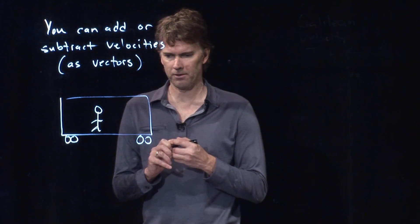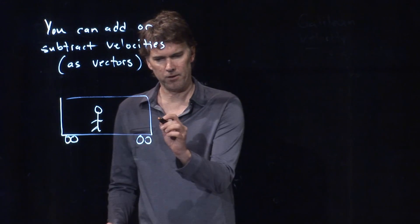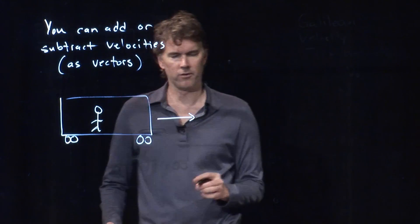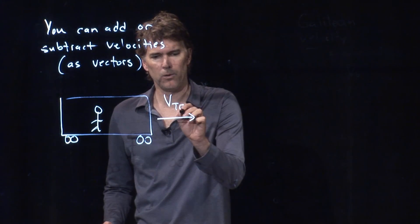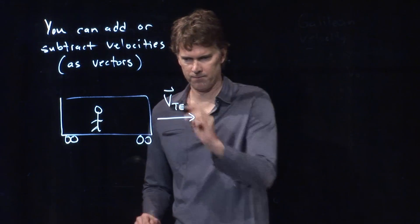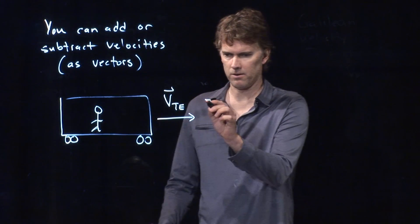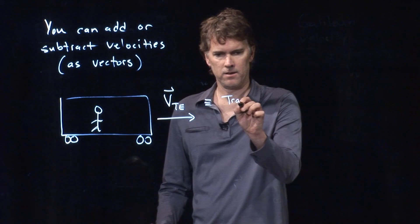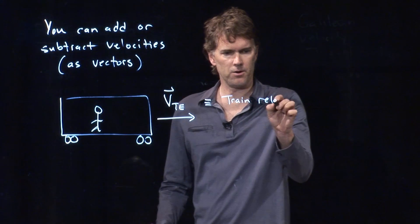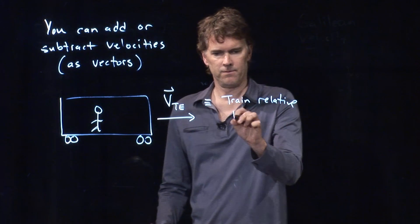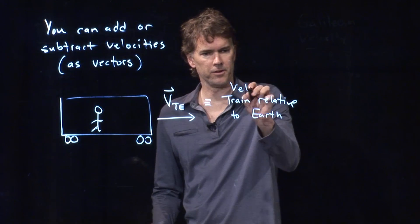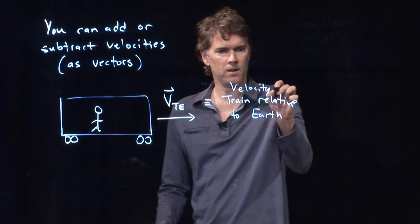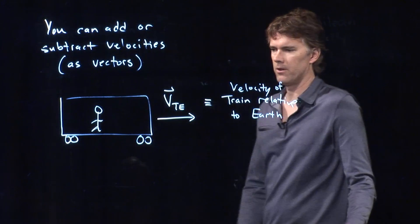And let's identify what those vectors are. So we have the vector for the velocity of the train relative to the Earth. This is train relative to Earth. And specifically, it's the velocity of the train relative to Earth.